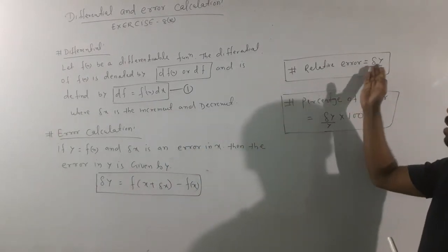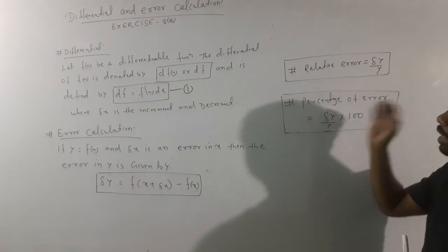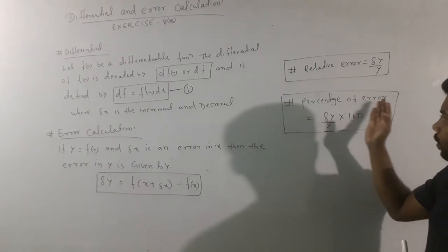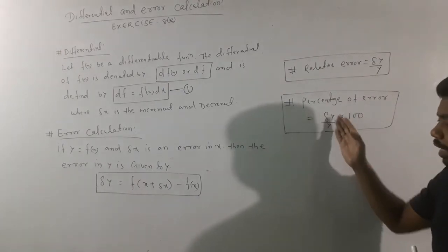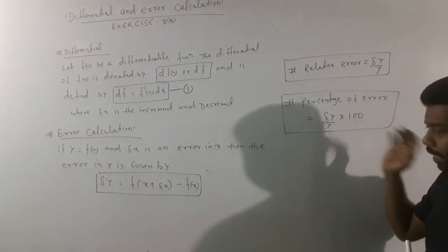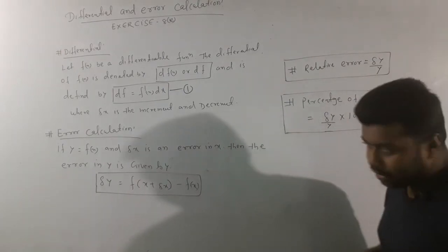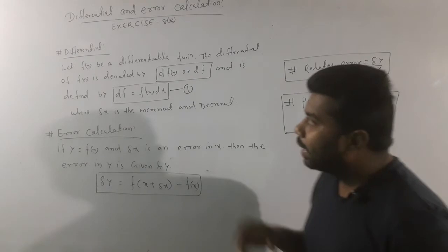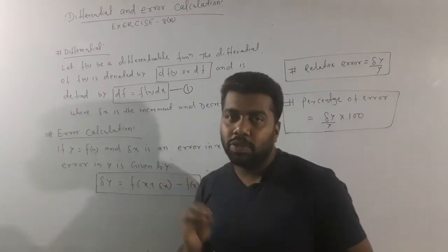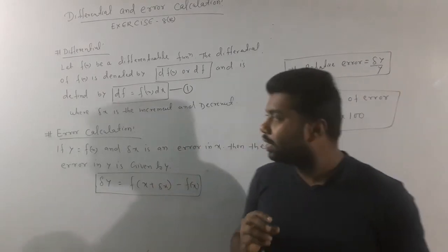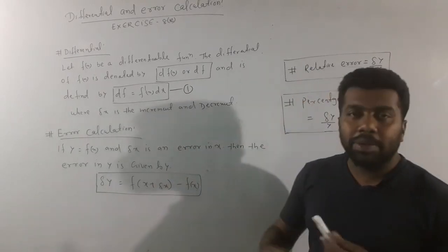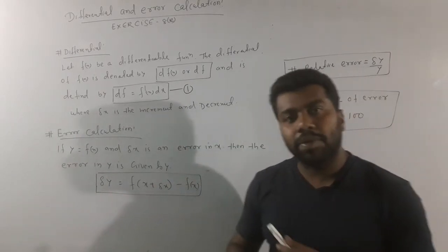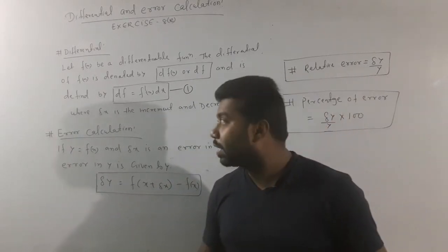Similarly, the relative error formula is δy divided by y, and the percentage error formula is δy divided by y into 100. Once you have a question, it will be clear.